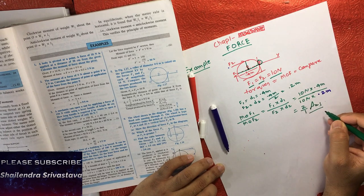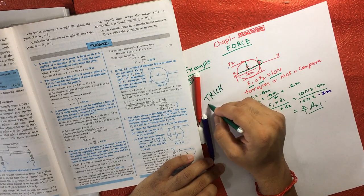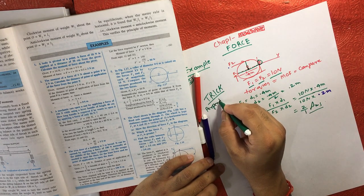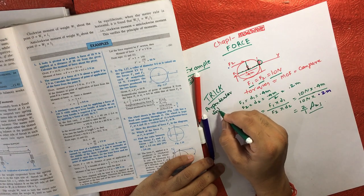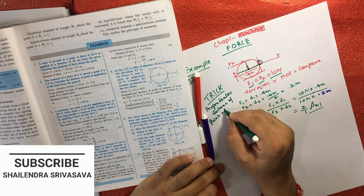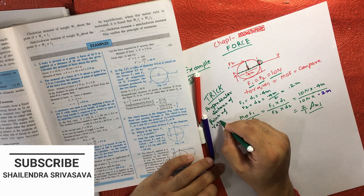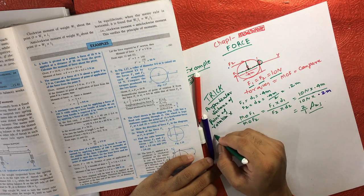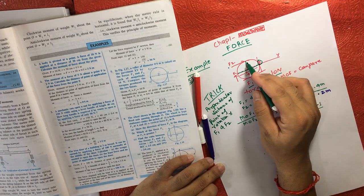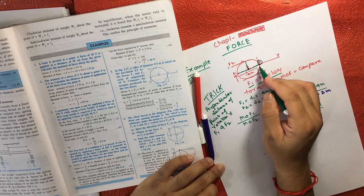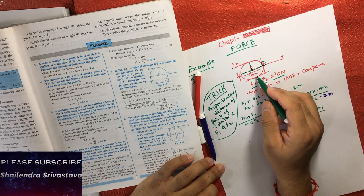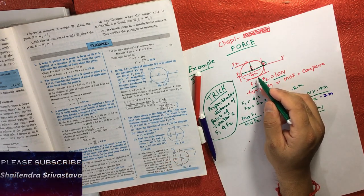So the trick here is: perpendicular distance from the point of rotation X. That's the only trick to find out the distance. If you know this, you will be able to solve this question.